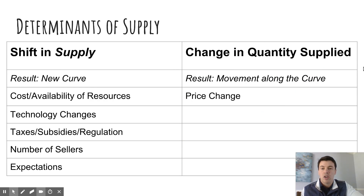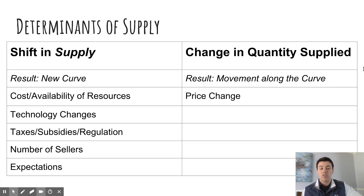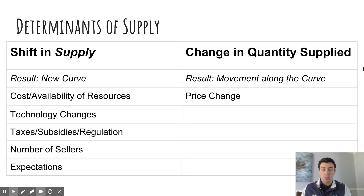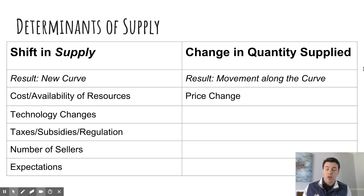Let's get into those determinants of supply. A change in quantity supplied results in movement along the curve, and only one thing causes that: price. In terms of shifts, there are multiple things that could cause this, resulting in a new curve altogether. Most of them revolve around resources and their cost to produce. Cost of resources, or the availability of resources needed to produce the product, would cause an increase or decrease. If something becomes cheaper to produce or easier to extract, that would cause an increase in supply — a shift to the right — and the opposite would be a decrease.